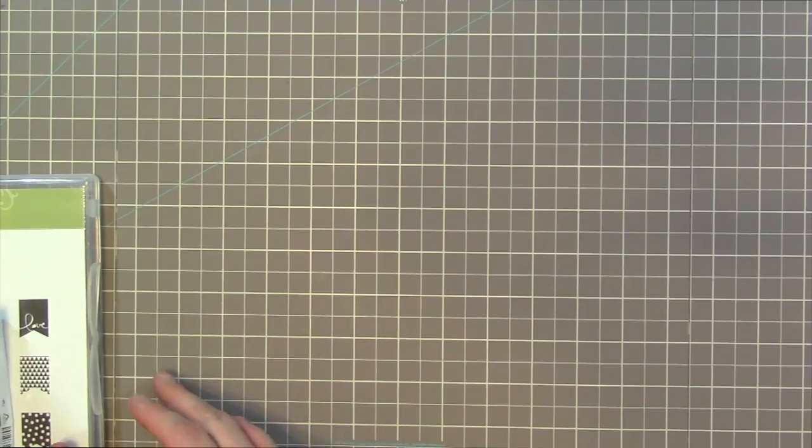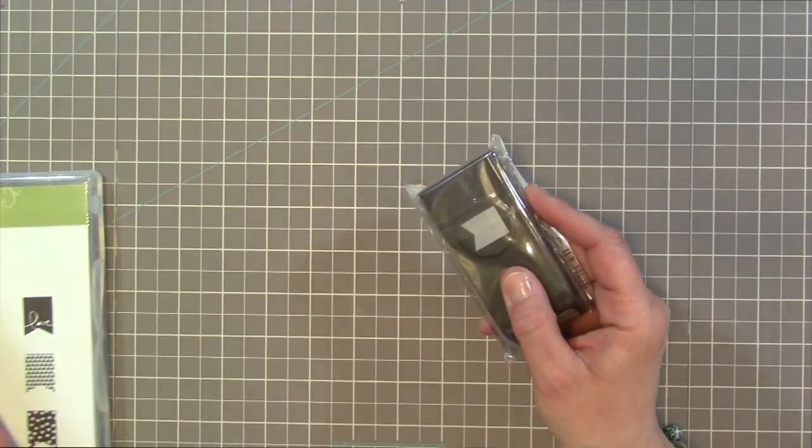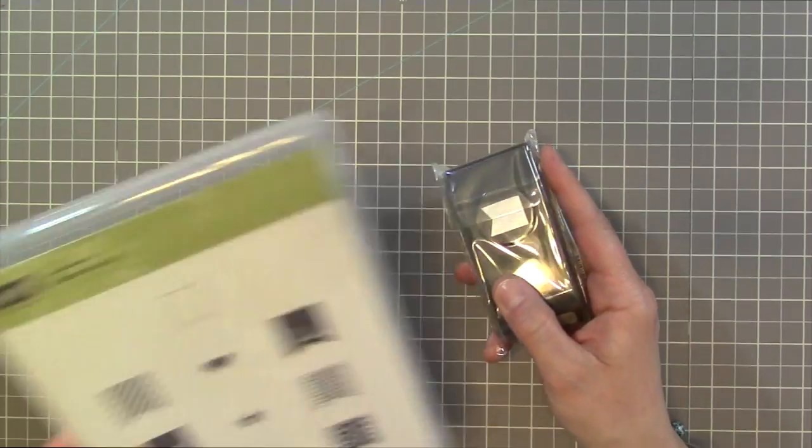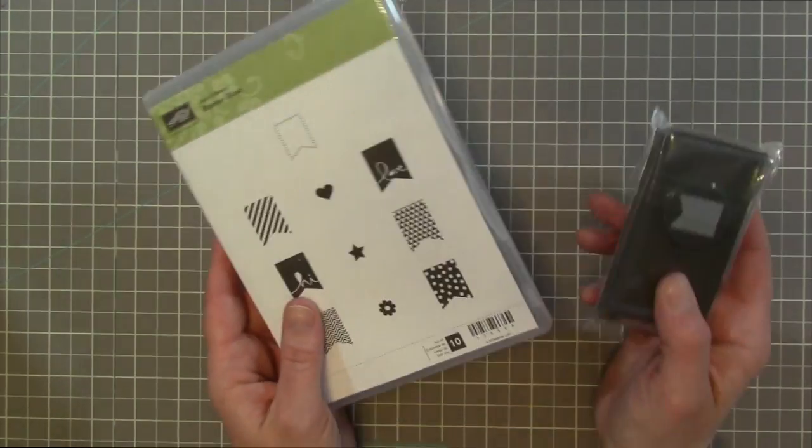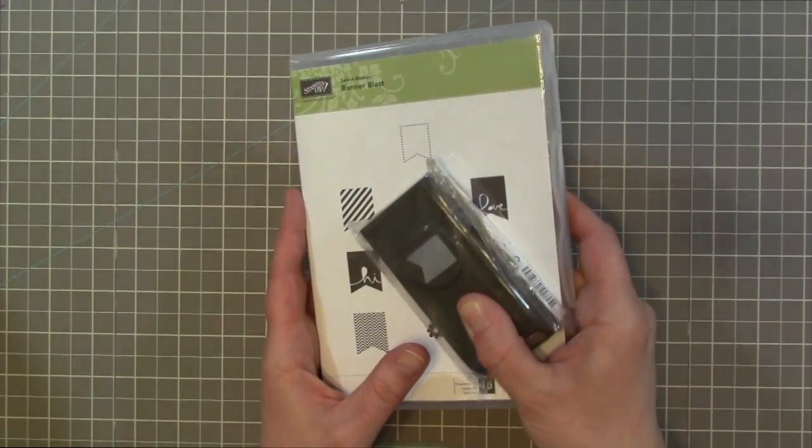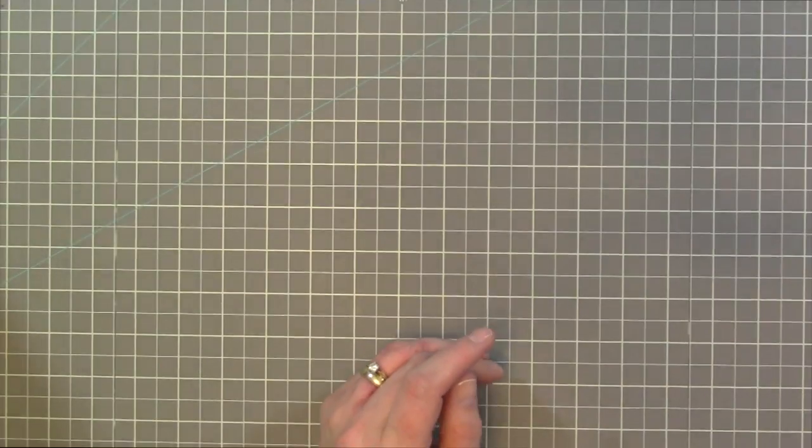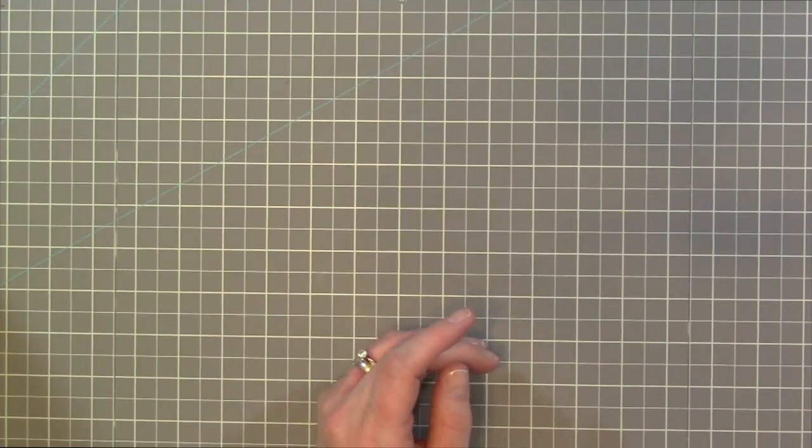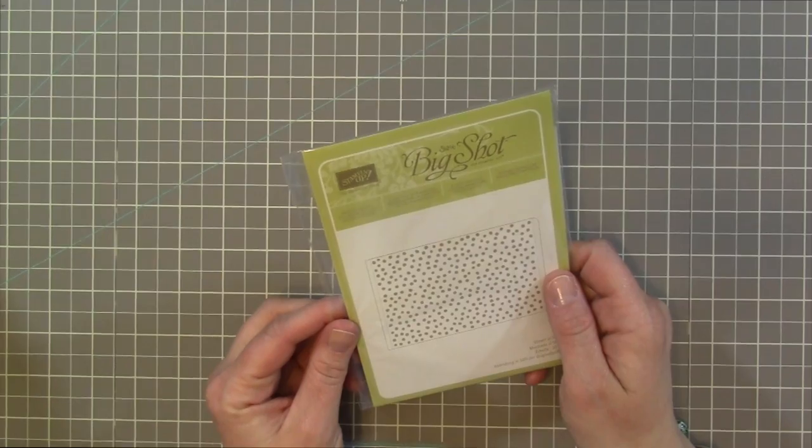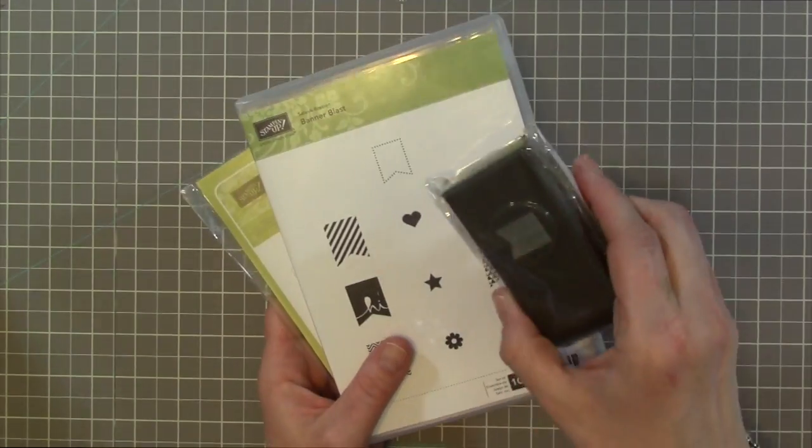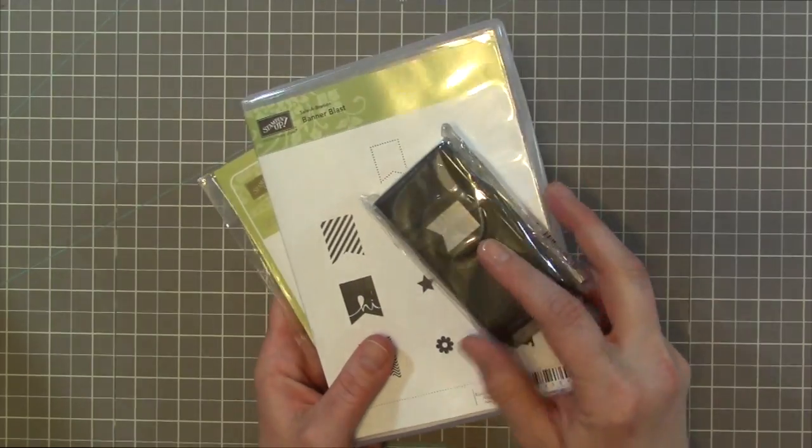And then I got the Bitty Punch. This is called Banner. And then the Banner Blast stamp set which I already have now. So I am going to actually give this away. So head over to my blog where you can enter to win this stamp set and punch. And then I also got the Decorative Dots which I'm also including in the giveaway. So you're going to get Decorative Dots, the Banner Blast, and the Coordinating Punch to Banner Blast. So head over to my blog so you can enter to win that.